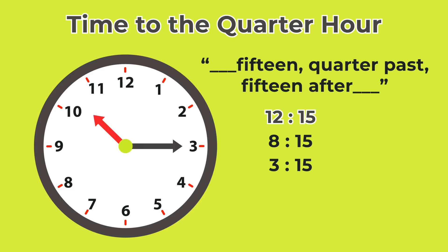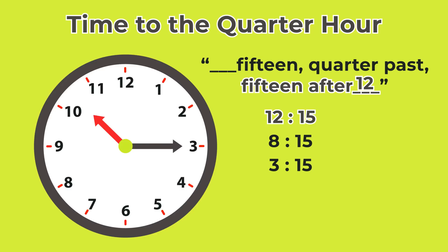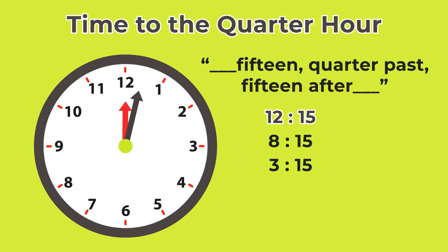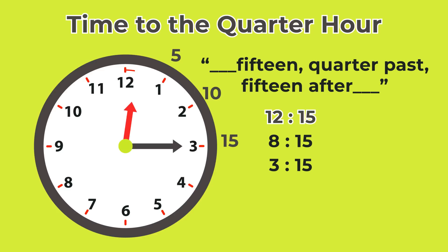In this case, we are going to look at twelve fifteen, or quarter past twelve, or fifteen after twelve. If we start at twelve o'clock, the big hand is on the three — the fifteen after. The little hand is just a little bit past the twelve. The little hand comes about a quarter between twelve and one — five, ten, fifteen. So this is twelve fifteen, or quarter past twelve.